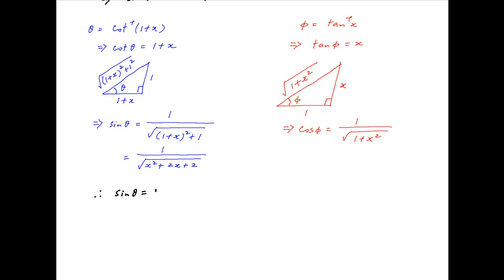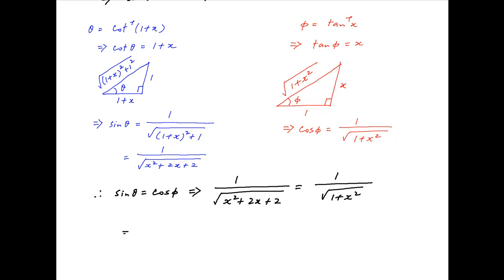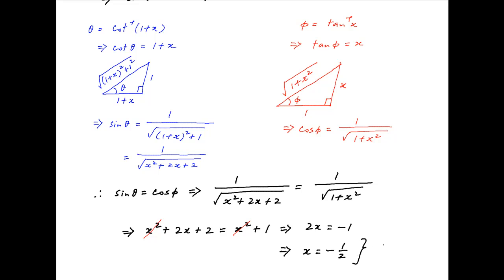Using the given equation sin theta is equal to cos phi and substituting the results above, we get 1 upon square root of (x squared plus 2x plus 2) is equal to 1 upon square root of (1 plus x squared). Taking the reciprocal and squaring both sides, we get x squared plus 2x plus 2 is equal to x squared plus 1. x squared cancels and we get 2x is equal to minus 1, which implies that x is equal to minus half, which is the required solution.